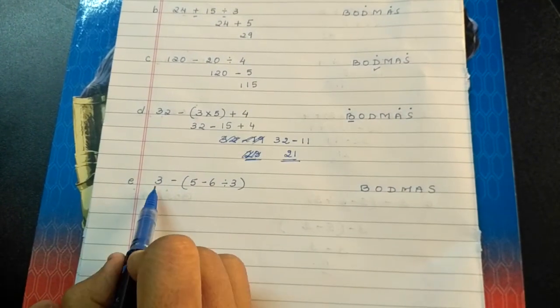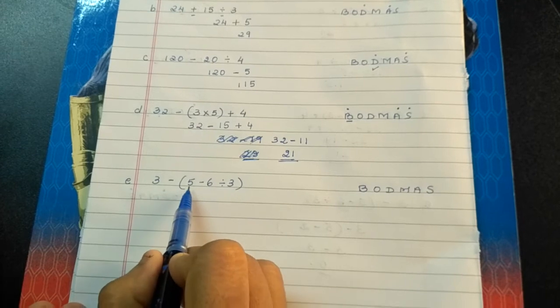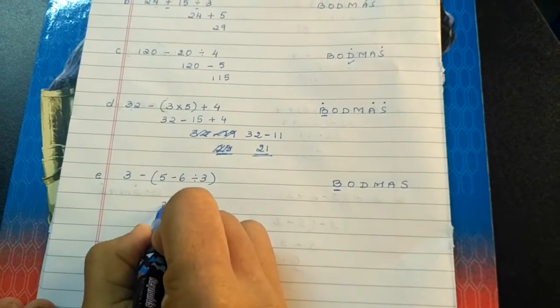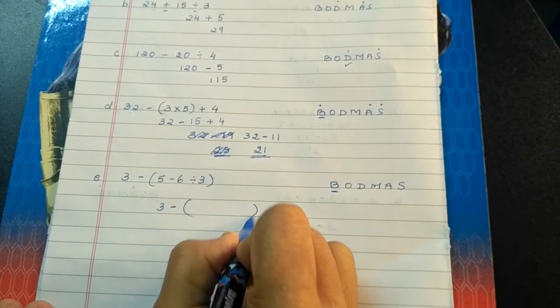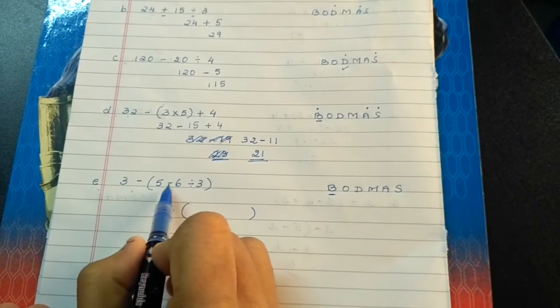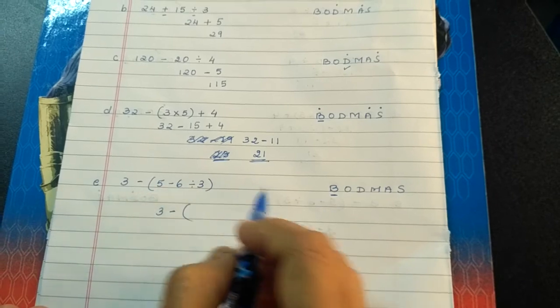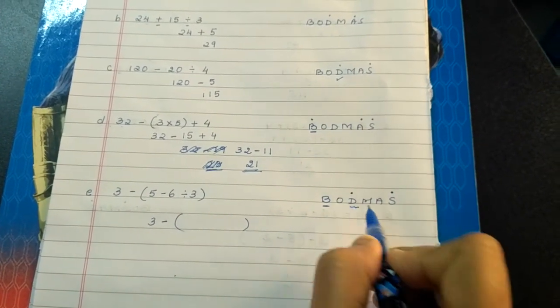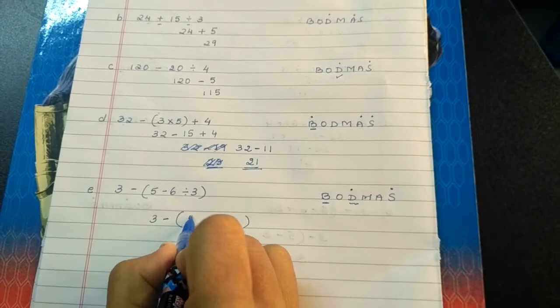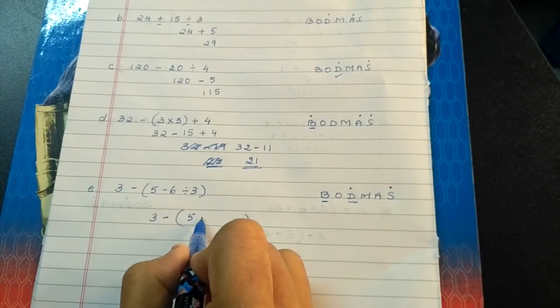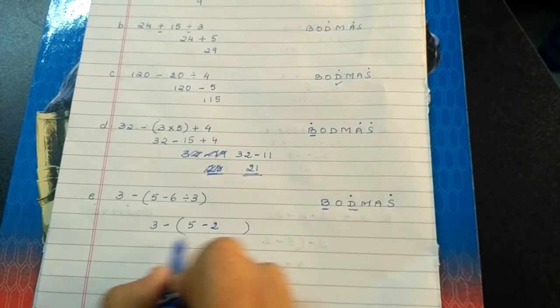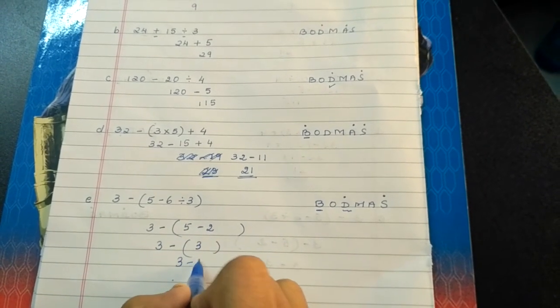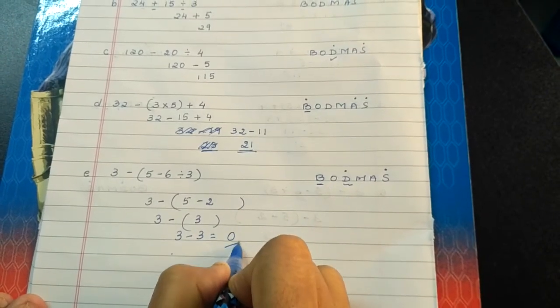Next we will do 3 minus in the bracket 5 minus 6 divided by 3. So brackets is the first thing which we have to do. In the bracket, if you see there are two operations involved: subtraction and division. So first we will do division. 5 minus 6 divided by 3 is 2. 3 minus 5 minus 2 is 3. So 3 minus 3 is equal to 0.